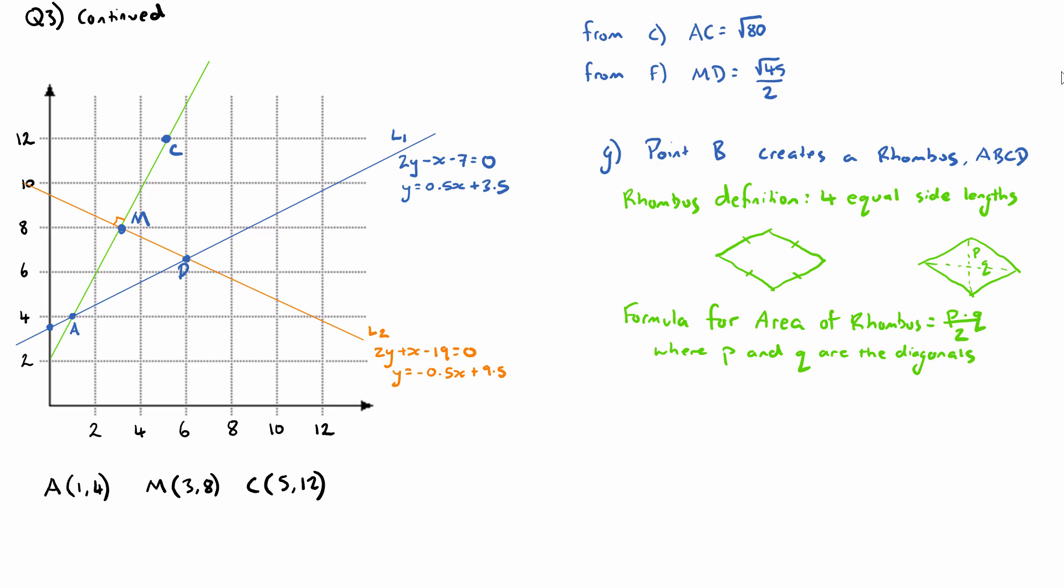Question 3 part G asks us to find the area of shape ABCD. We don't actually know where point B is yet, but we're told that if we connect these four points, ABCD would create a rhombus.